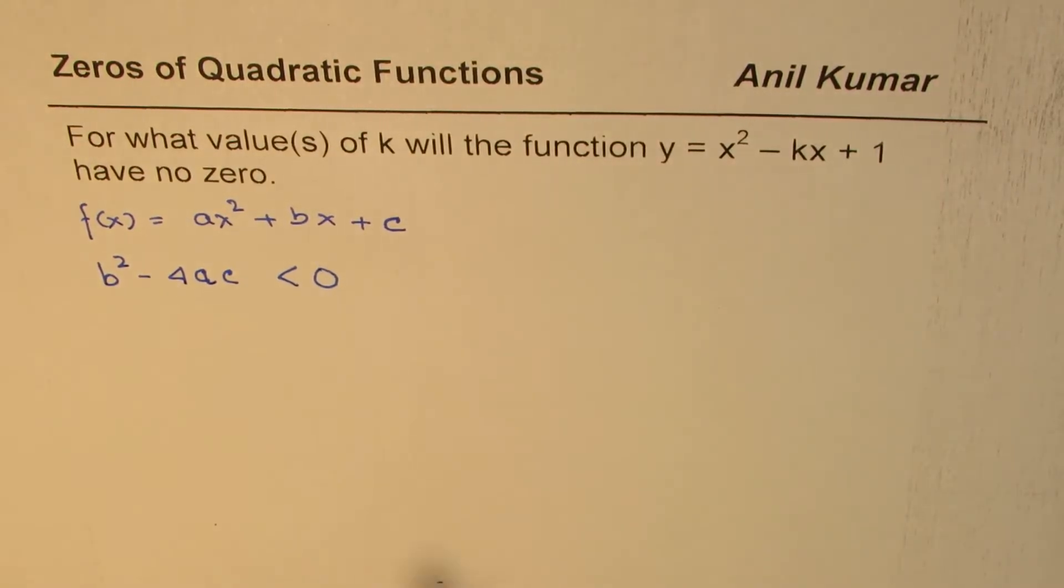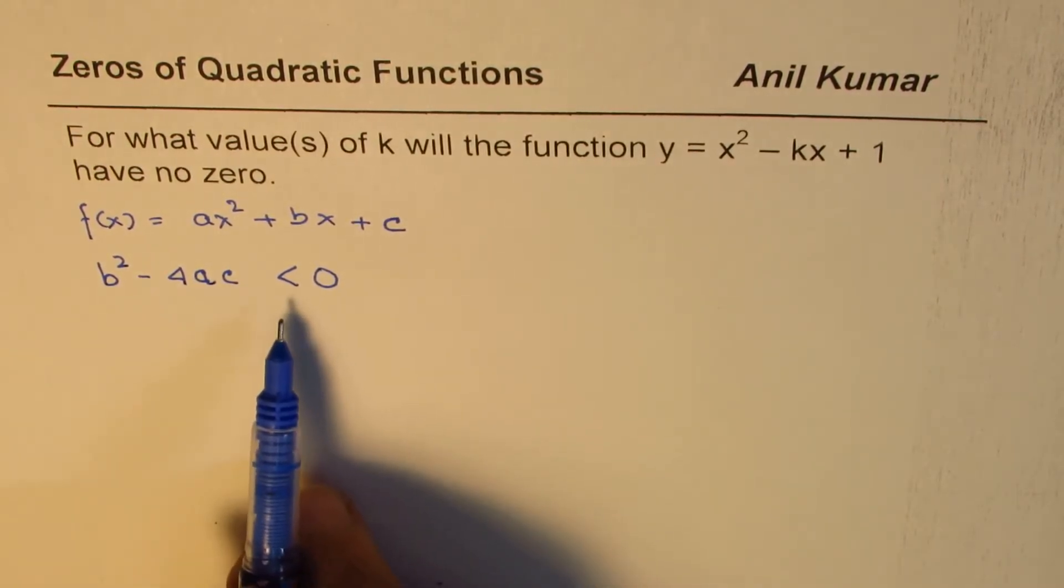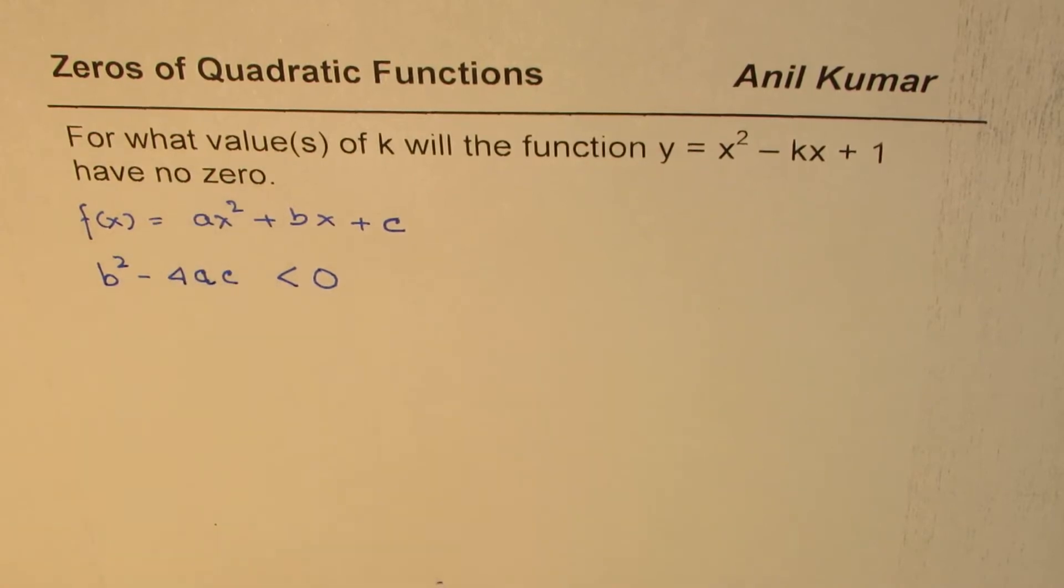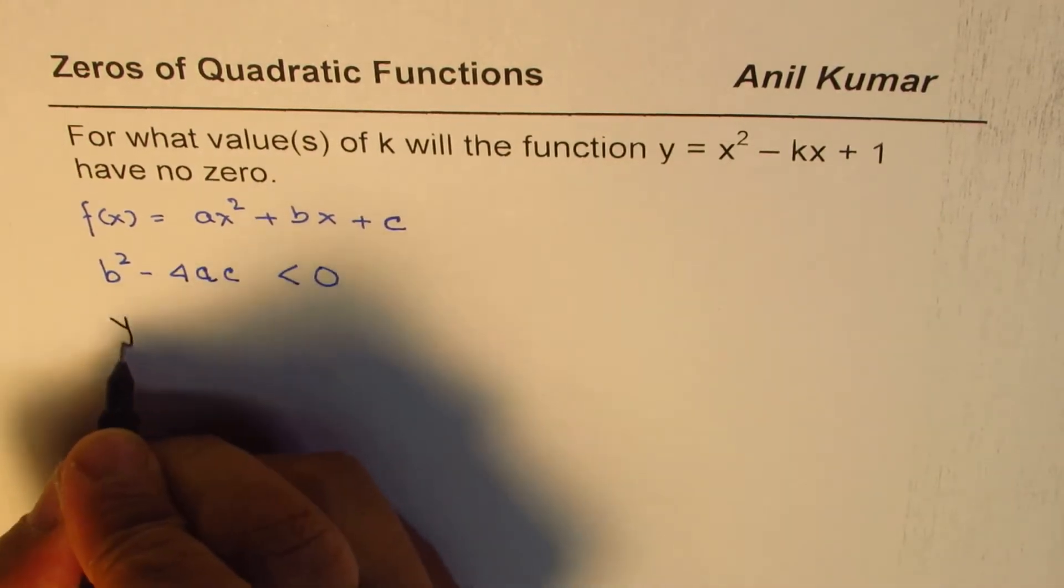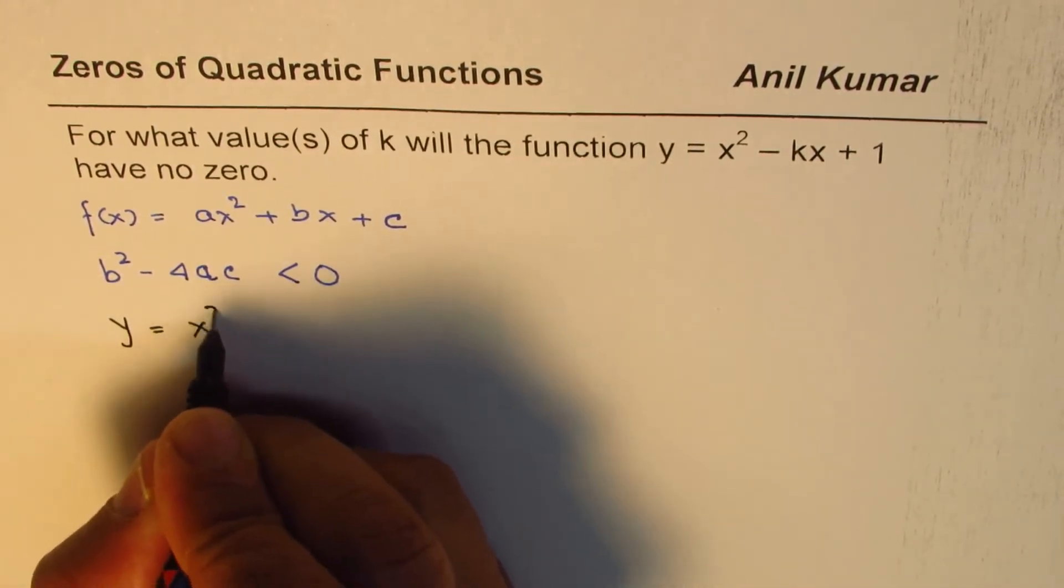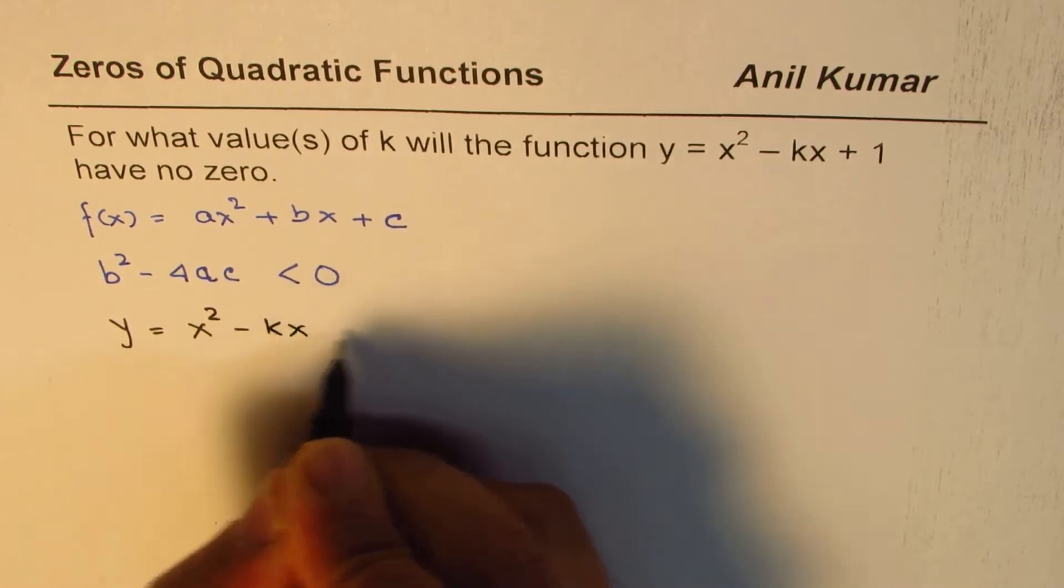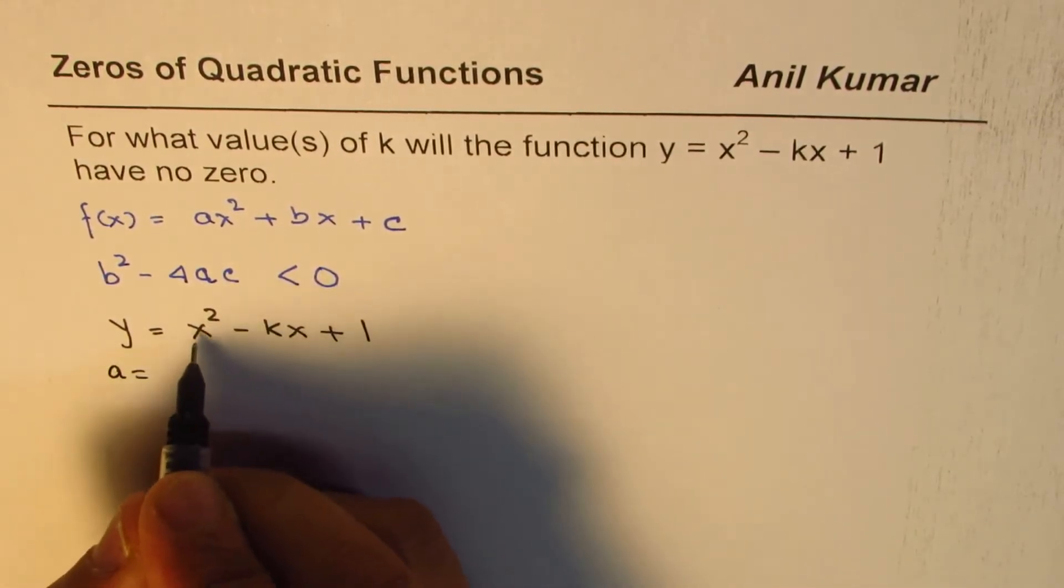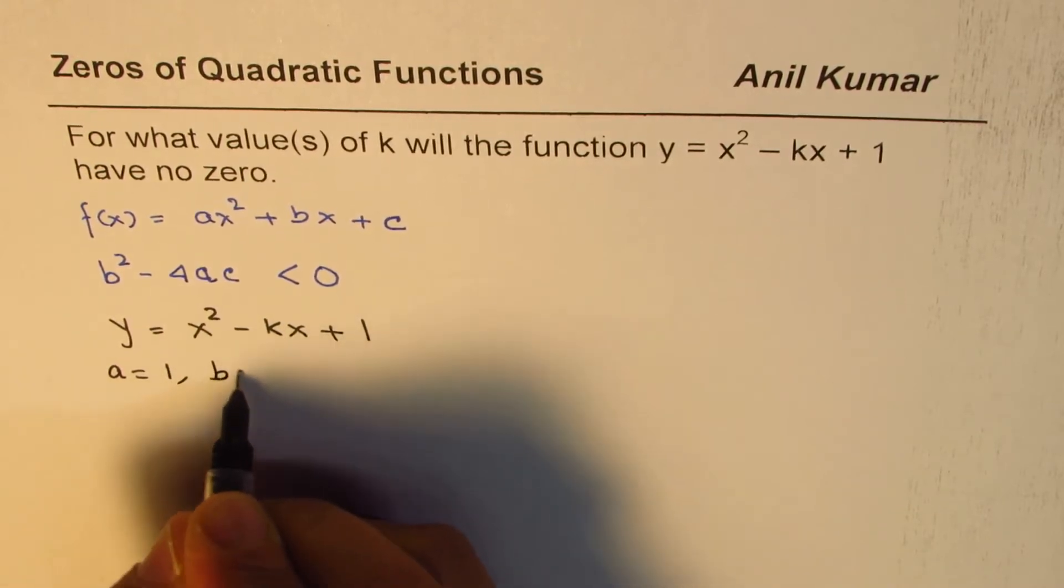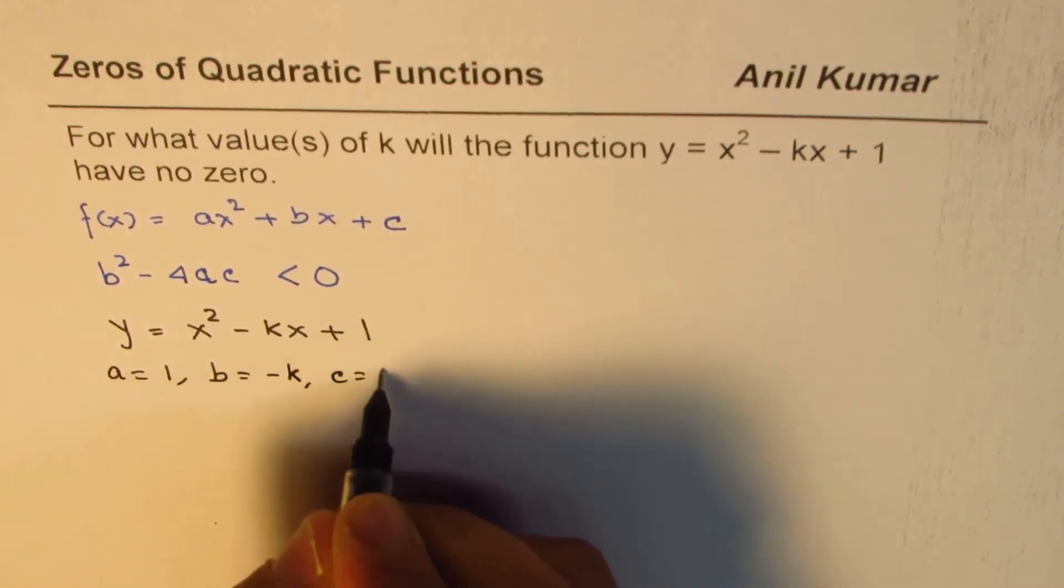If this discriminant is zero, then we do not have any real root, so that is no zeros. Let's begin solving this question. We are given y = x² - kx + 1. Here a is coefficient of x² which is 1, b is -k, and c is also equal to 1.